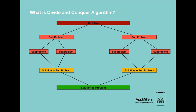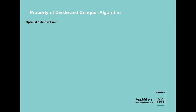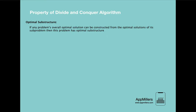Now let's see the properties of divide and conquer algorithm. The main property is the optimal structure property. If any problem's overall optimal solution can be constructed from the optimal solutions of each subproblem, then this problem has optimal structure. This means if the subproblem solutions are optimum and we can combine them to get a global optimum solution, it's called optimal structure property. For example, finding Fibonacci(n): the formula is Fibonacci(n) = Fibonacci(n-1) + Fibonacci(n-2). We can break this problem into subproblems — n-1 and n-2 are subproblems of n — and continue dividing until we reach 0, showing this problem can be solved using divide and conquer.